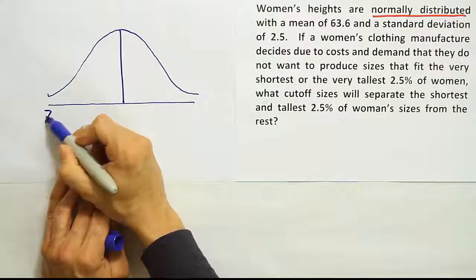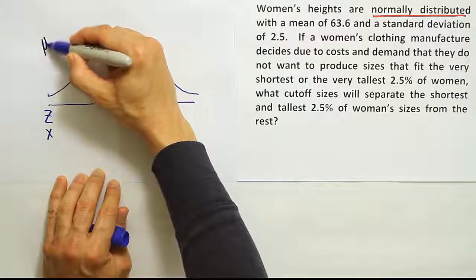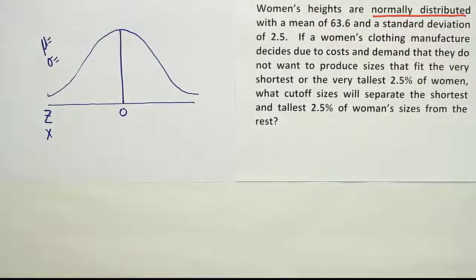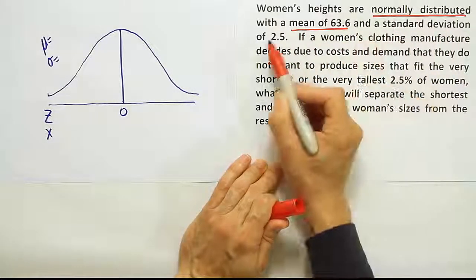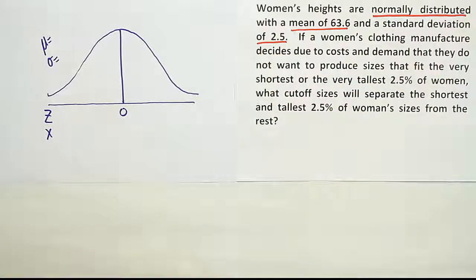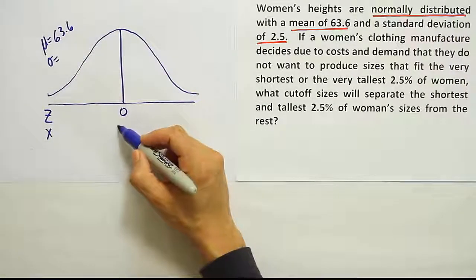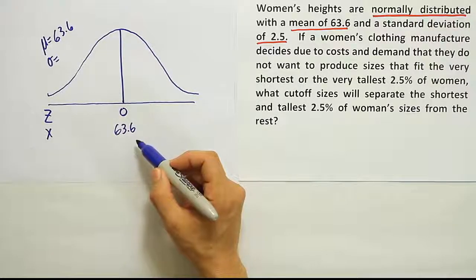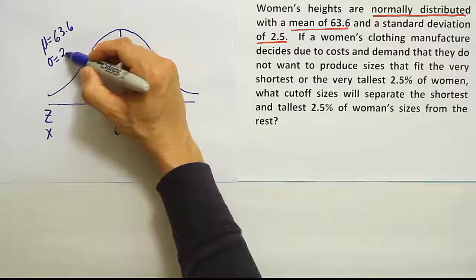Always label a z-axis and an x-axis. Z-axis centered at 0 and have the mean and the standard deviation over here. Now as I go on to read the problem, it says that it has a mean of 63.6 and a standard deviation of 2.5. So the mean I know here should be 63.6. I'll put that down here at the bottom because the x-axis here is representing a female's height or women's heights. So the average should be in the middle, 63.6, and 2.5 for the standard deviation.